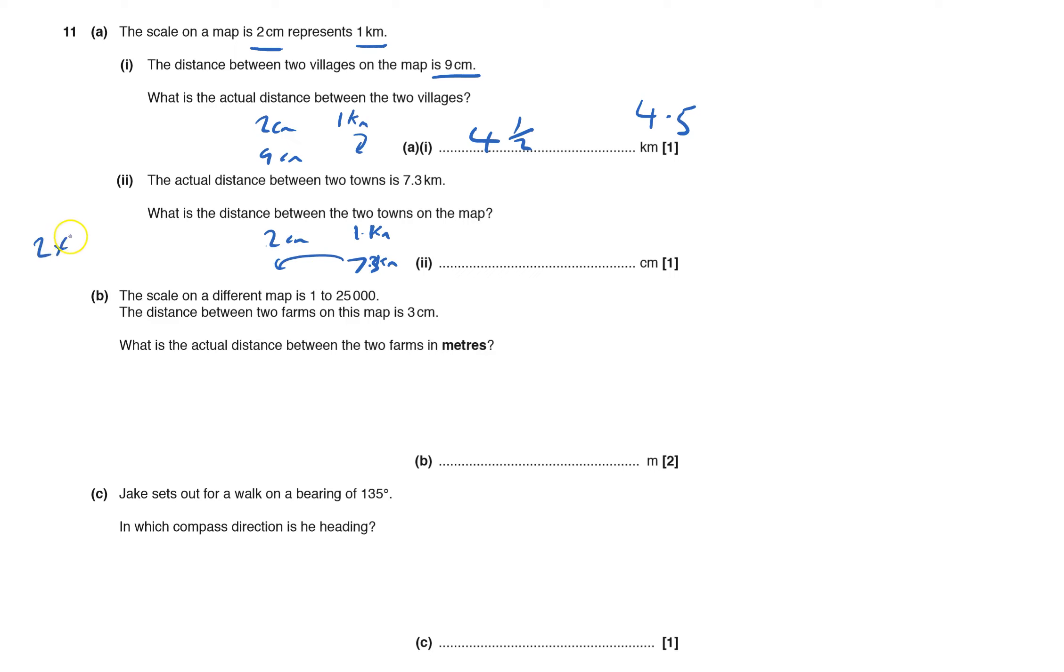I've got two times 7.3, or 7.3 times 2, which are exactly the same, and both equal 14.6.